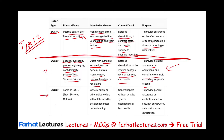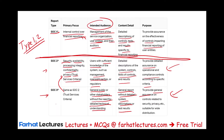SOC 3 is similar to SOC 2 and deals with the trust service criteria. However, the intended audience is different — it's the general public or other stakeholders without the need for detailed technical understanding. The content is a general report without detailed system descriptions or test results. The purpose is to provide general assurance on controls related to security, privacy, etc., and it's suitable for wide distribution.